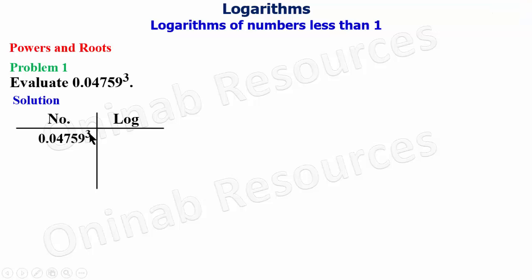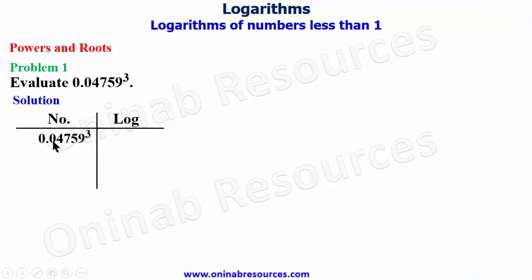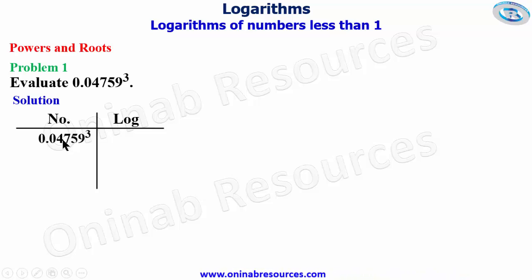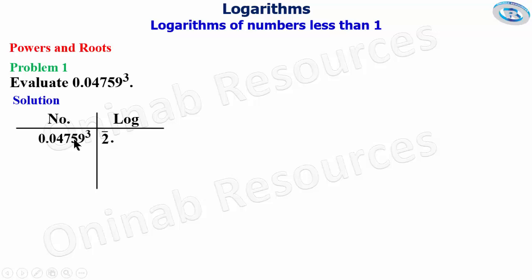First we find the logarithm of 0.04759. Before that we find the integer part of the logarithm, which is going to be bar 2 — because if this number is expressed in standard form, the power of ten is negative two. Remember from our previous video, it is written as bar 2. We place our point, then go to the logarithm table, look for 47 under 5, differences of 9, and that gives us 6775.